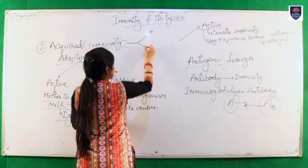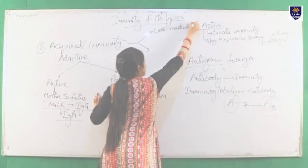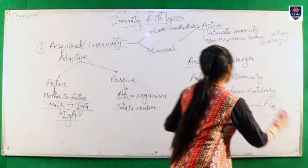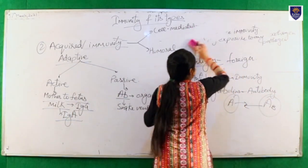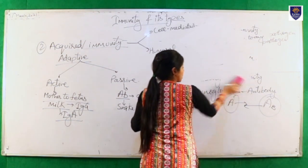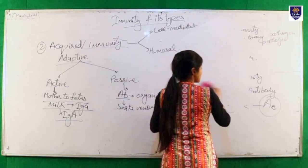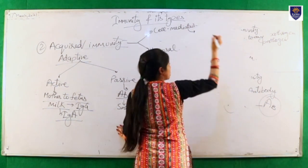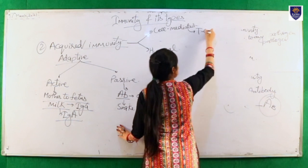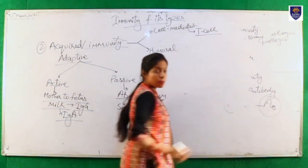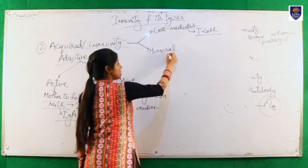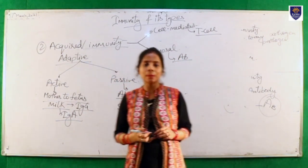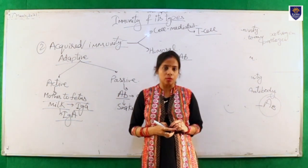In acquired immunity, there are also two further types: cell-mediated immunity and humoral immunity. In cell-mediated immunity, T cells play a role in providing immunity. In humoral immunity, antibodies play a role in providing immunity against a particular antigen or pathogen.